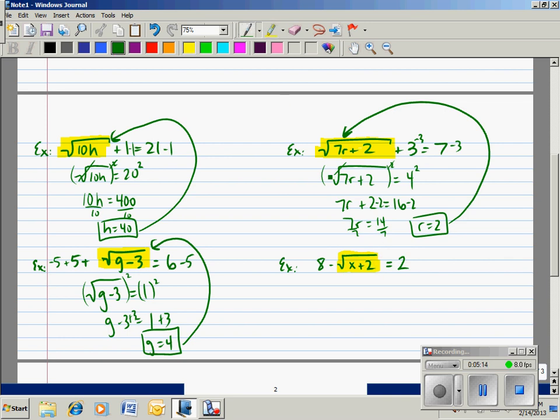Example 4, I want to get the radical all alone. First step, we will subtract 8 from both sides. That gives me 0. So what I have left is negative square root of x plus 2 equals negative 6. Now, there's a negative 1 here. If there's a negative coefficient, that means it's negative 1. So the next thing I need to do to get the radical all alone is to divide by negative 1 because those will cancel. And I'm left with the square root of x plus 2 is equal to positive 6. Now, if I square both sides, I get x plus 2 is equal to 36. Subtract 2. x is equal to 34.